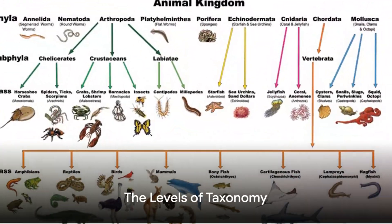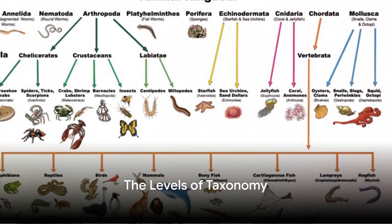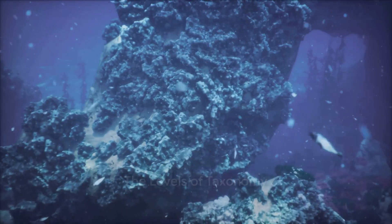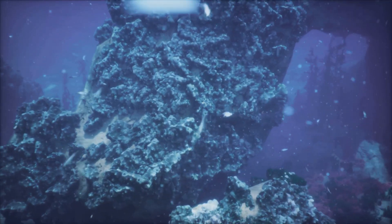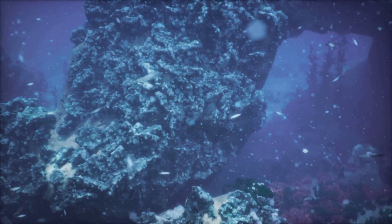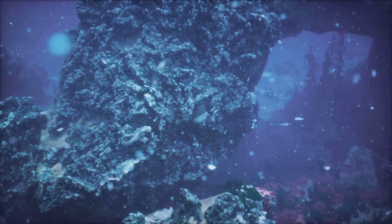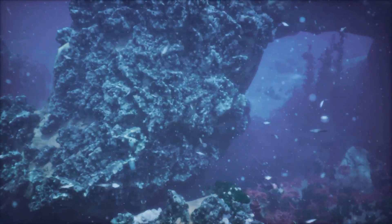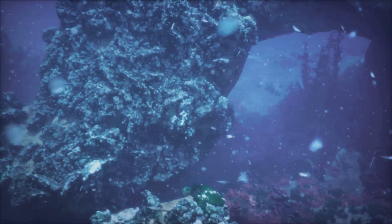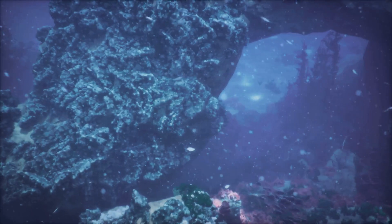Next comes the phylum, a level that groups organisms based on similar characteristics. For instance, in the Animalia kingdom, the phylum Chordata includes all animals possessing a notochord, like us humans.